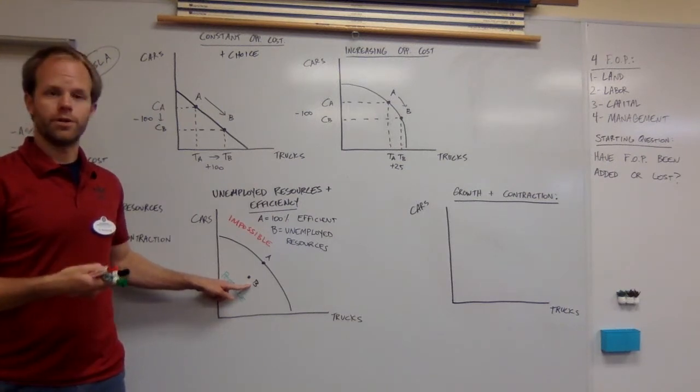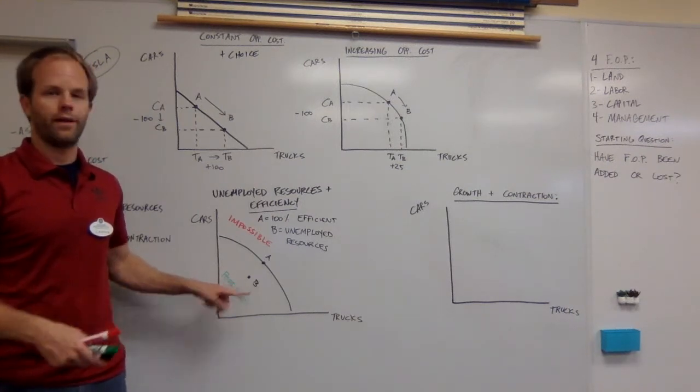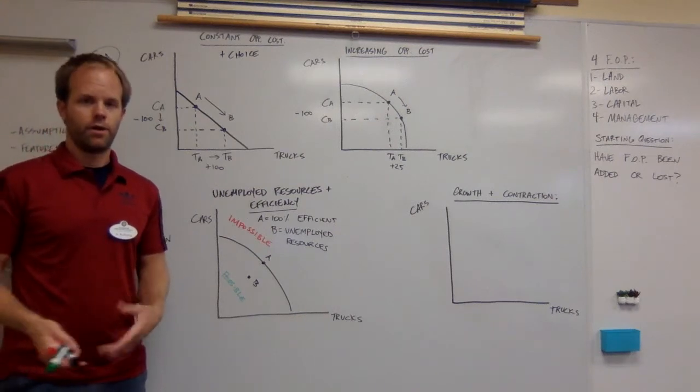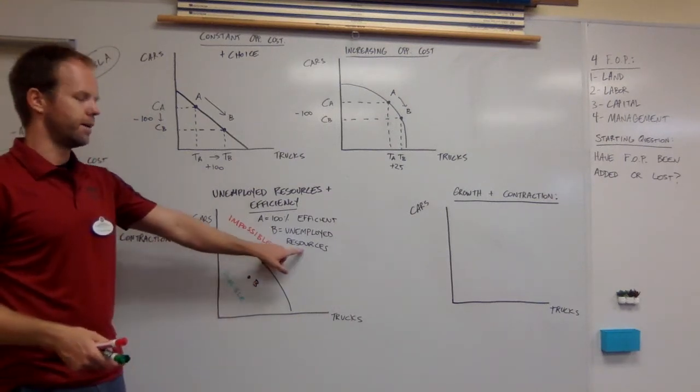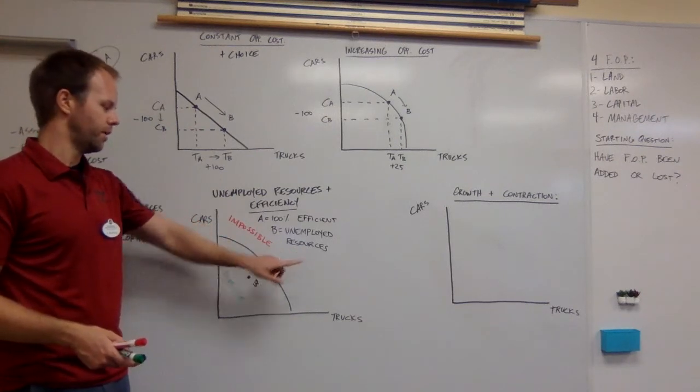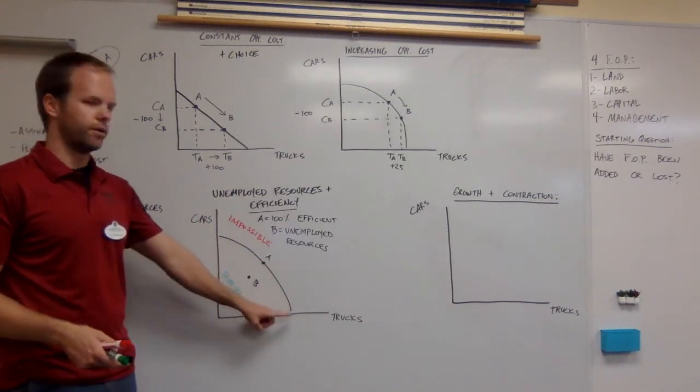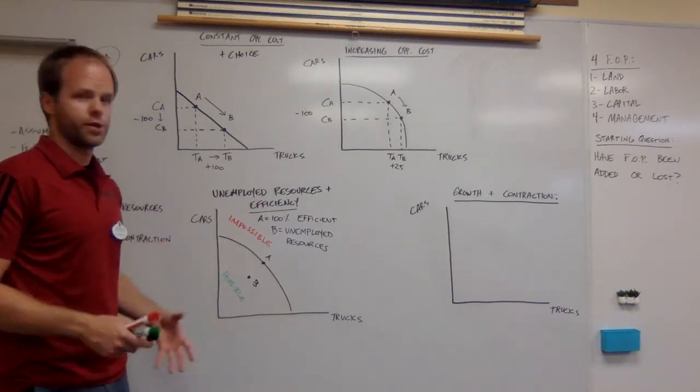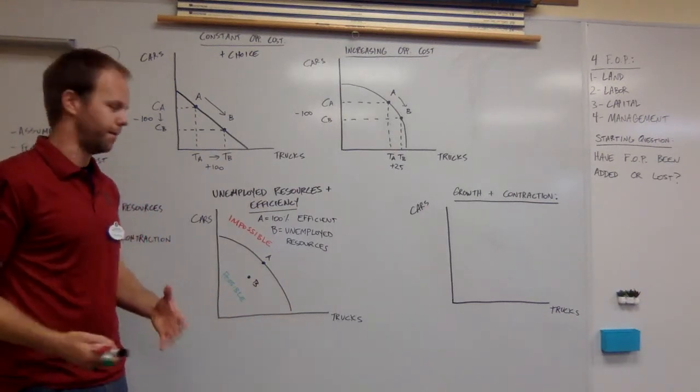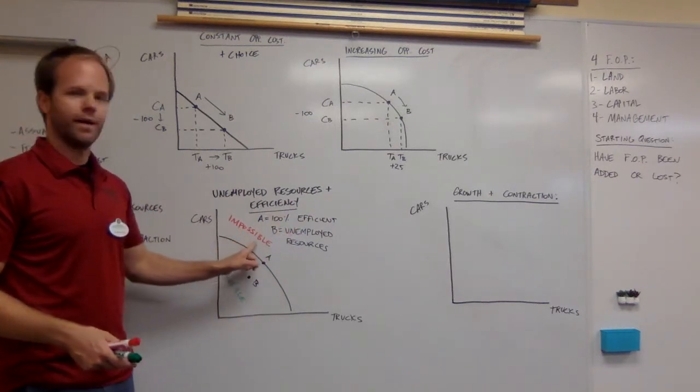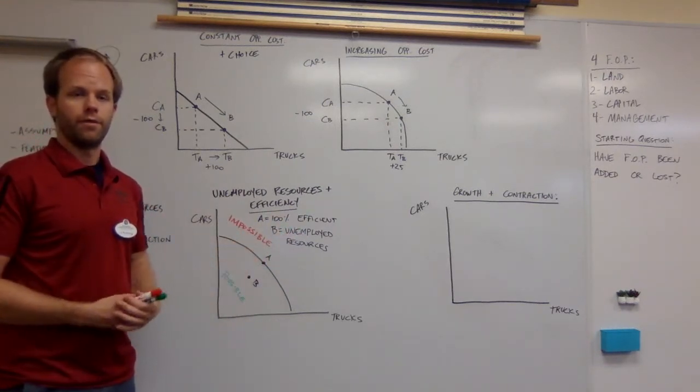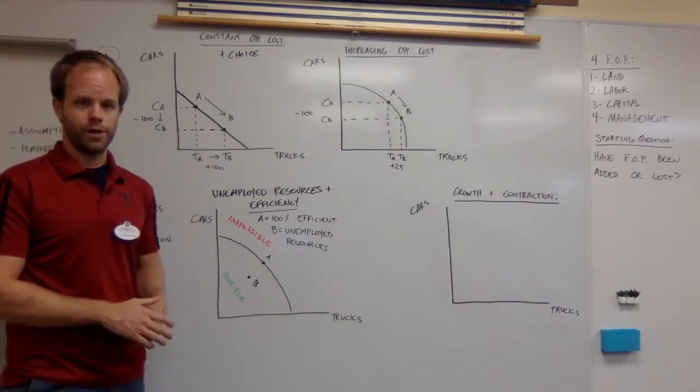In that case, they had a labor shortage. You could say that Tesla was not producing to the fullest extent that it could because they had capital that was sitting idle, workers that couldn't physically make it to work and factories that were empty. Anything inside the curve means there are unemployed factors of production. If it's on the curve, the business is efficient. If it's outside the curve, that is not a possible combination.